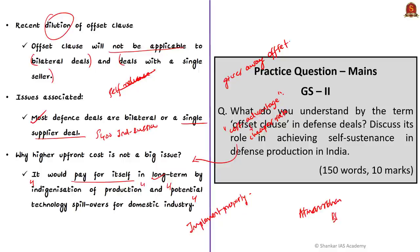This kind of policy inconsistency exists across many departments. On one side, we say we need to improve indigenization of technologies and become self-reliant. But on the other side, we are giving away the offset clause, which is the primary driver of indigenization of defense manufacturing. This policy inconsistency is not going to benefit India, especially in defense procurement.